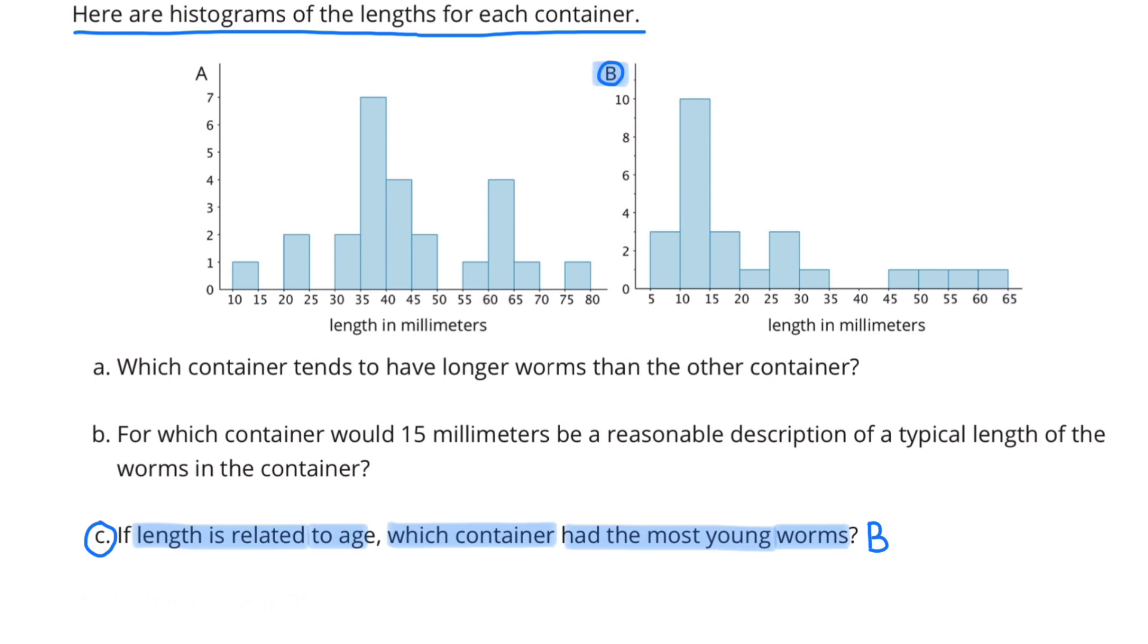If length is related to age, then container B would have more of the young worms, because the majority of their worms are between 5 millimeters and 35 millimeters in length, compared to container A, where most of the lengths are between 30 millimeters and 70 millimeters.